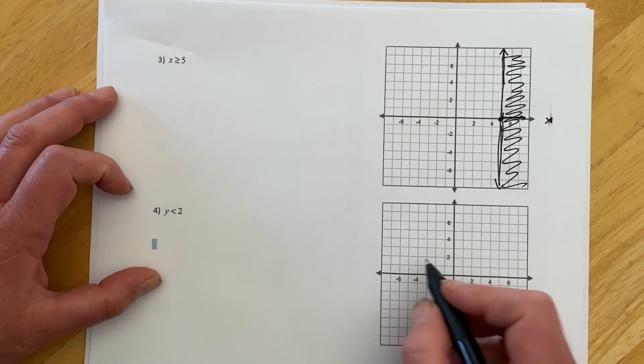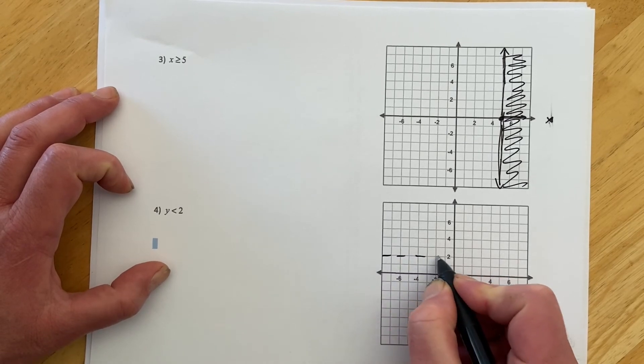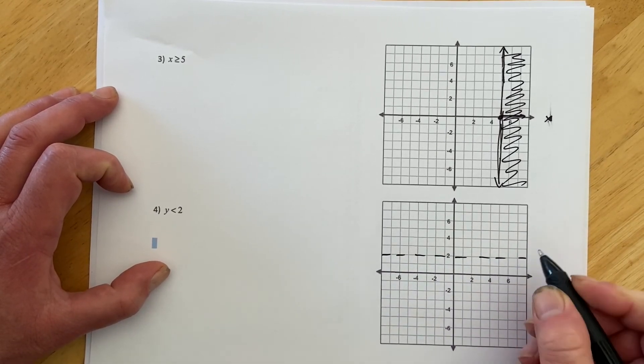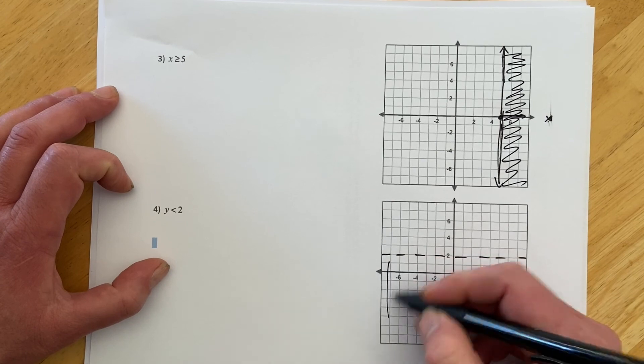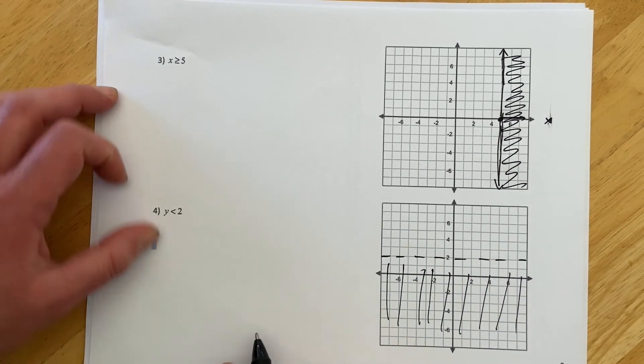Y less than 2. So that's going to be a dashed line. And the y's are less than 2 underneath it. So it might be shading down there.